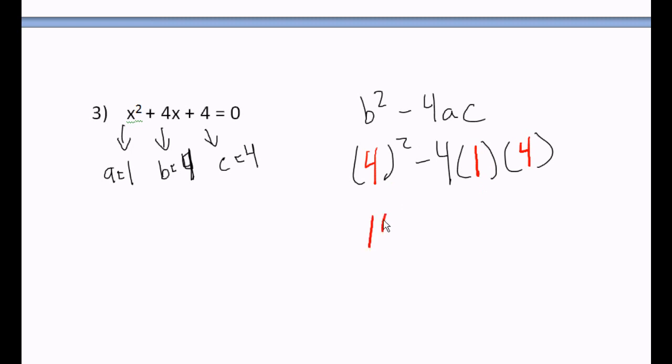4 squared is 16, minus 4 times 1 is 4, 4 times 4 is 16. 16 minus 16 is 0. That's our discriminant. Then it's going to ask you how many solutions do we have.